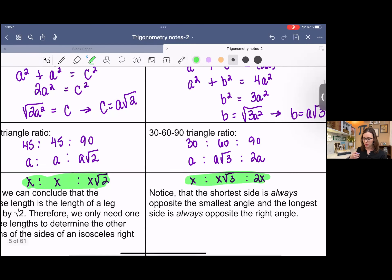Notice that the shortest side is always opposite the smallest angle, and the longest side is always opposite the right angle. So just kind of keep that in mind whenever you're working on examples. So now that we have our ratios, we can use these ratios as a tool to help us solve problems. So that's kind of the whole thing of math. You have all these tools, and you want to pick out which tool is the best to complete the job.